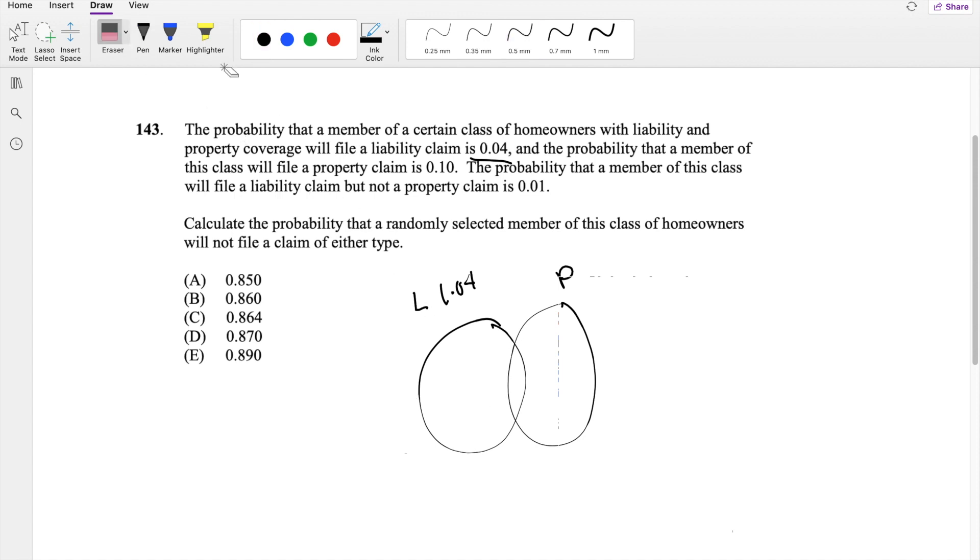And the probability that they file a liability claim but not a property claim, so this part right here is 0.01. So that means if they give you the liability, this whole thing to be 0.04, then we know just this blue part right here has to be 0.04 minus 0.01, which is 0.03.